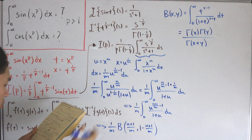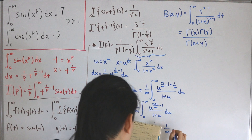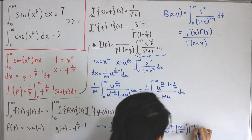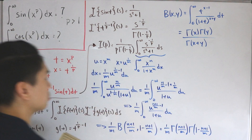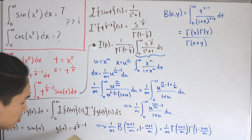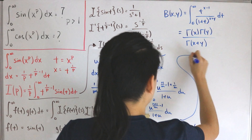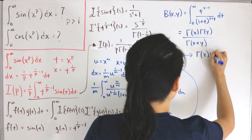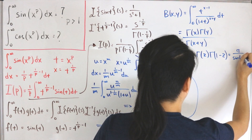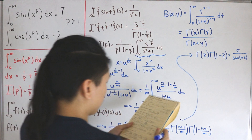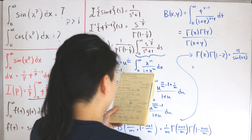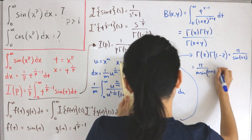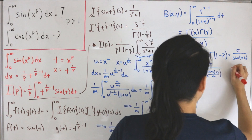We then apply Euler's reflection formula: Γ(z)·Γ(1−z) = π/sin(πz). This reduces the result to π / [m · sin((n+1)π/m)]. So the general formula is: ∫₀^∞ x^n/(1 + x^m) dx = π / [m · sin((n+1)π/m)].